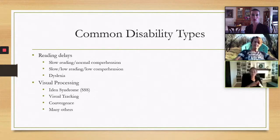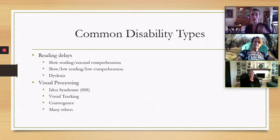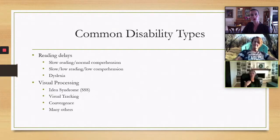Reading delays: some students are slow readers with normal comprehension — they just need extra time, which is where that accommodation helps. Others are slow and low readers, meaning they read below grade level with low comprehension and often need someone to read to them or a simplified version of the text. All that 1860s language in Uncle Tom's Cabin won't help them understand it at all. Dyslexia also takes kids much longer to get through any reading material, so we need to think about making their learning succinct or auditory.